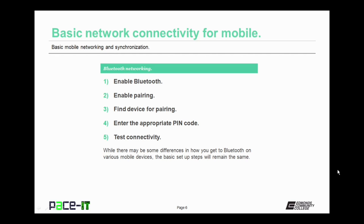Another type of network connectivity for the mobile device is Bluetooth. Many devices come with Bluetooth networking. To set up Bluetooth networking, go to the settings page on your mobile device. First, enable Bluetooth. Then enable pairing, and find the device for pairing — it usually comes up on the screen. Enter the appropriate PIN code when requested, and then test for connectivity. While there may be some differences in the process, the basic steps remain the same.